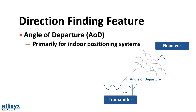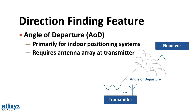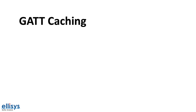In the case of angle of departure, it is primarily useful for indoor positioning systems. It requires an antenna array of at least two antennas at the transmitter side, and a single antenna at the receiver side. For example, a transmitter could be a fixed locator device that sends a signal to be received by a smartphone. The smartphone could then determine the direction of the received signal from the angle of departure data and translate that to a location on a map displayed in a smartphone app.